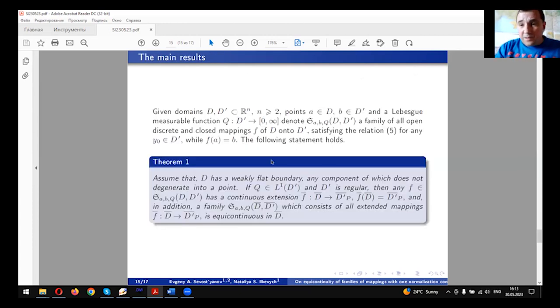And the main results. Given domains D and D', some fixed points A and B and Lebesgue measurable function, denote by Σ_{A,B}(Q) the family of all open-discrete-closed mappings between domains D and D' satisfying the inverse Poletsky inequality mentioned above and such that f(A) equals to B.